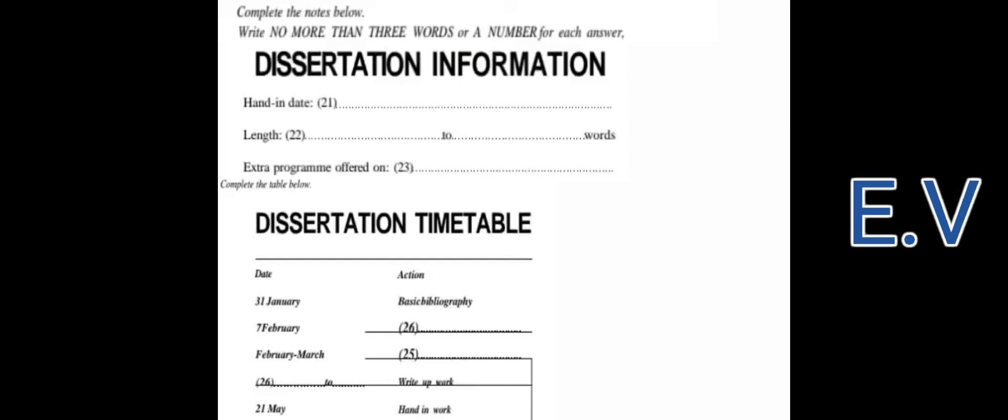And when do we have to be doing the research? That's over a one-month period, essentially February to March. And the writing? Well, you can't really get going on your writing until you've got quite a bit of the research done, so that's really March to May, with the hand-in date on the 21st. Any more questions?